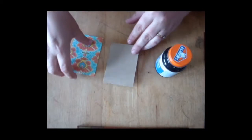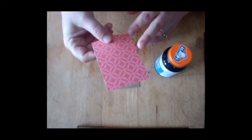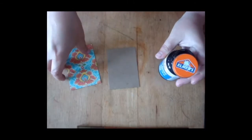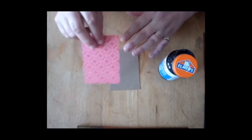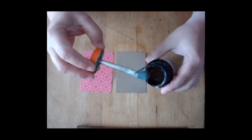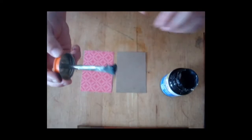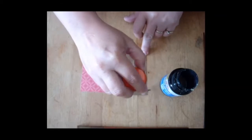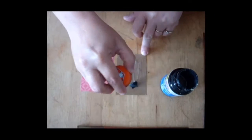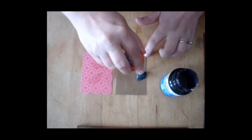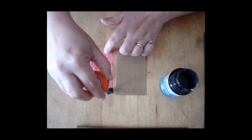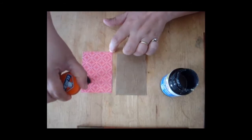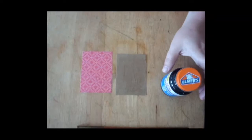I'm going to take my blank and this opulent sunset paper from the Bohemian Bazaar collection. This is the side that I want to show, so I'm going to turn that upside down. I'm going to take the rubber cement and it comes with a built-in brush. I'm going to cover the entire face of this side. You just need really a thin layer. I'm going right to the edge here.